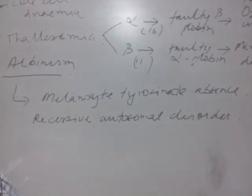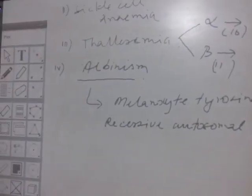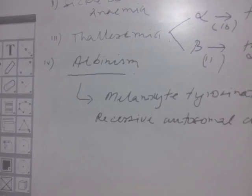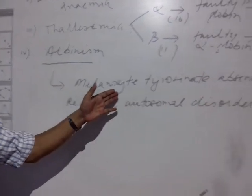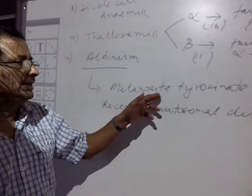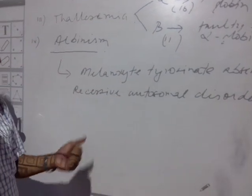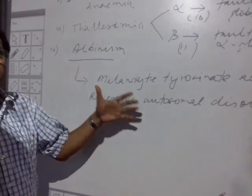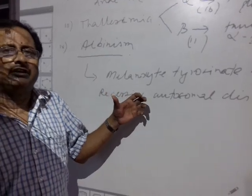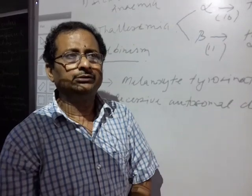Albinism is also a type of autosomal recessive disorder which occurs in humans and other animals. A faulty gene causes the absence of the tyrosinase enzyme, so melanin formation does not take place properly. The person is born without melanin pigmentation.